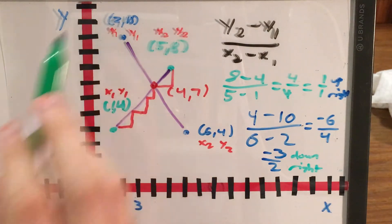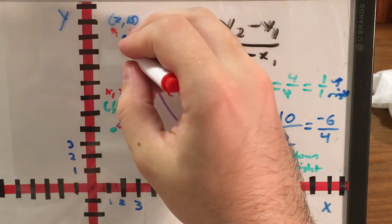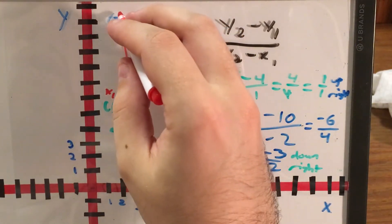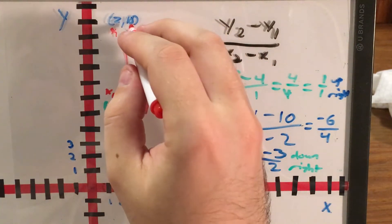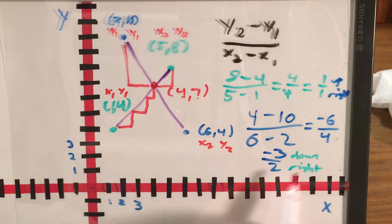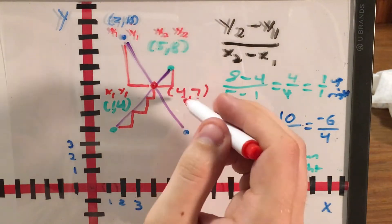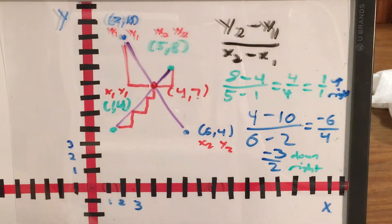So let's try that pattern out from the point (2, 10). If I go 3 down and 2 right, 2 right would actually get me to 4. 3 down from 10 actually gets me to 7. So I've basically found slope related patterns, continued those until I found the point (4, 7) as an intersection for both of these.